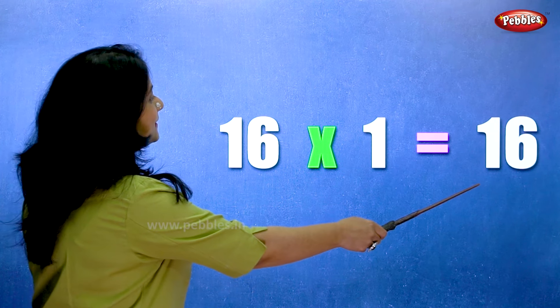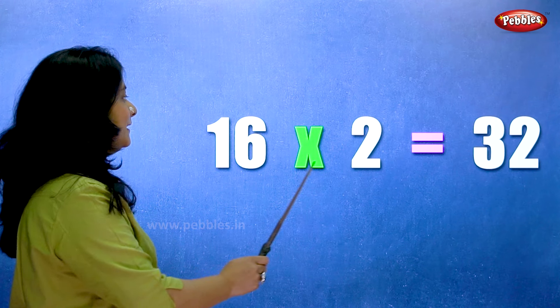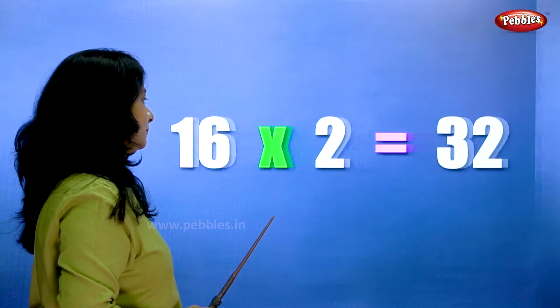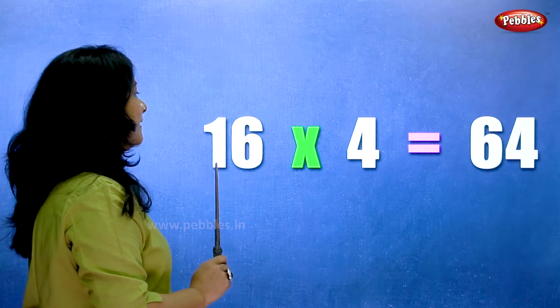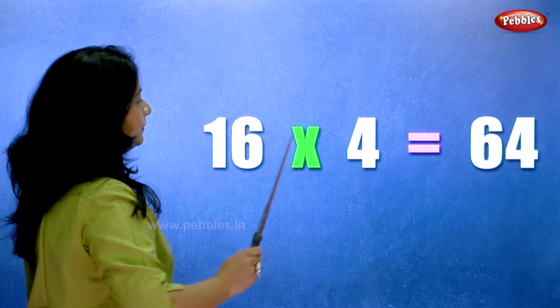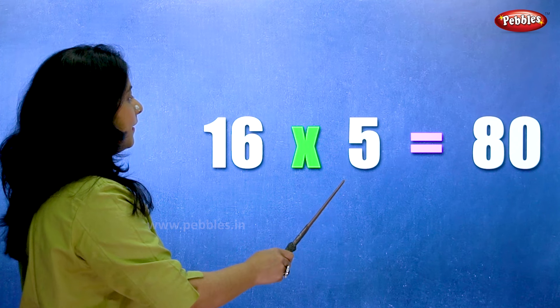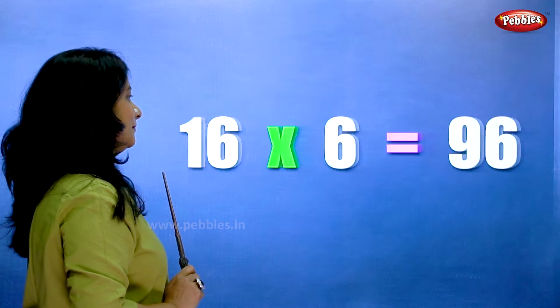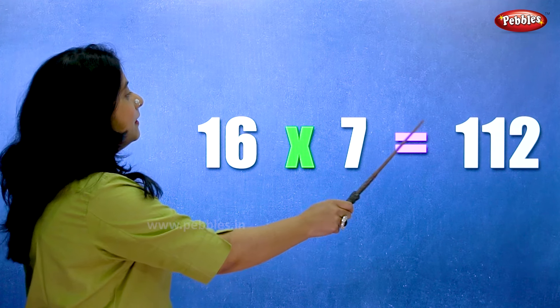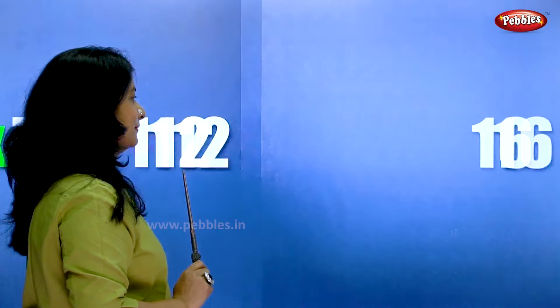Sixteen ones are sixteen. Sixteen twos are thirty-two. Sixteen threes are forty-eight. Sixteen fours are sixty-four. Sixteen fives are eighty. Sixteen sixes are ninety-six. Sixteen sevens are hundred and twelve. Sixteen eights are one twenty-eight. Sixteen nines are one forty-four. Sixteen tens are one sixty.